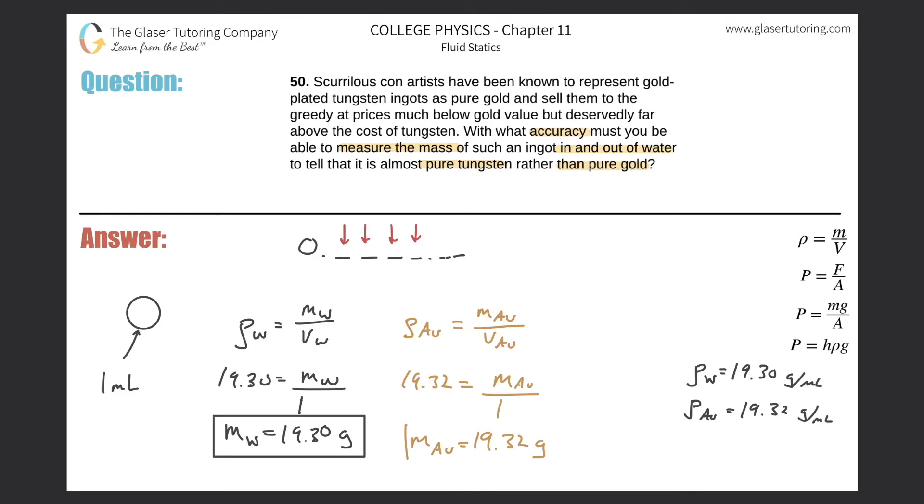So the difference here between these two, if you notice, these two numbers differ in the hundredths place. This value has a zero in the hundredths place for tungsten and this value has a two in the hundredths place. That's where they differ.